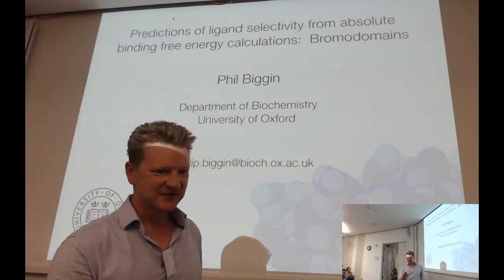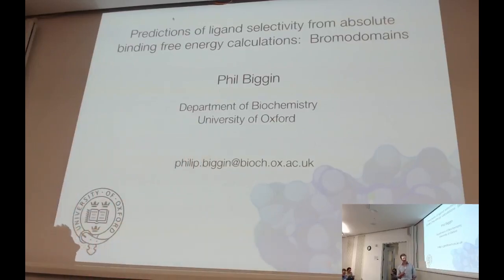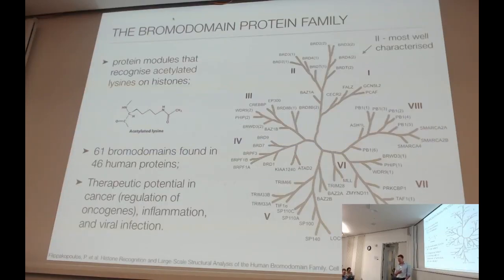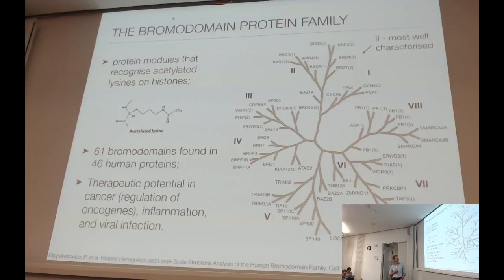I'm going to walk you through a recent example that we've been looking at, which is to do with bromodomains. Bromodomains are small protein molecules or domains that recognize acetylated lysines on histones, and that is part of the recognition process that controls transcription and things like that. There are 61 bromodomains found in 46 human proteins, and there is therapeutic potential generally in the case of cancer, but also in things like inflammation and viral infection as well.